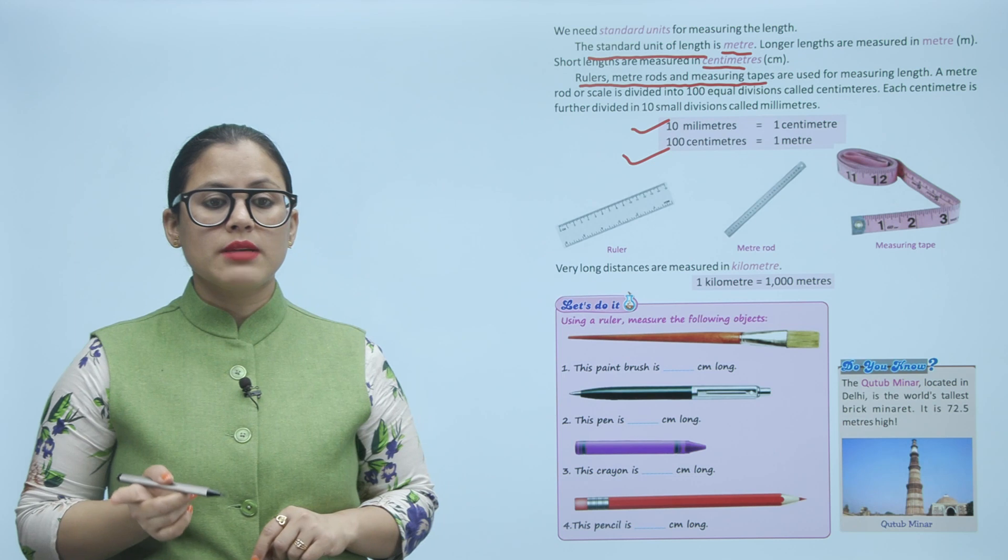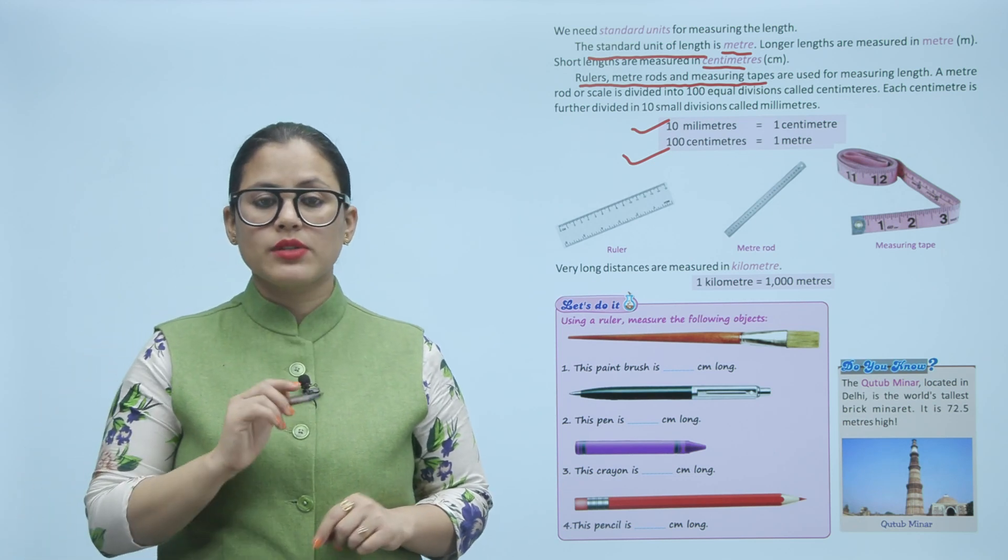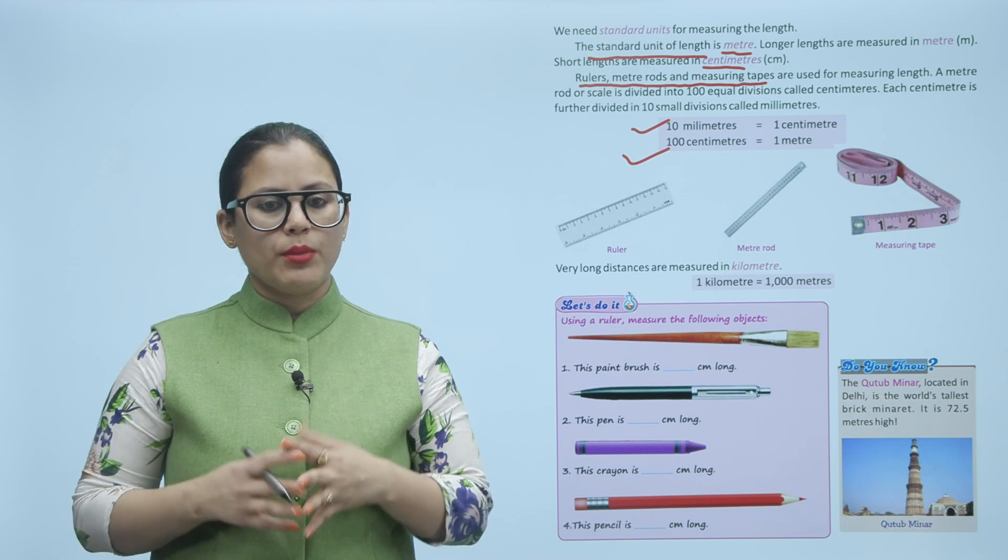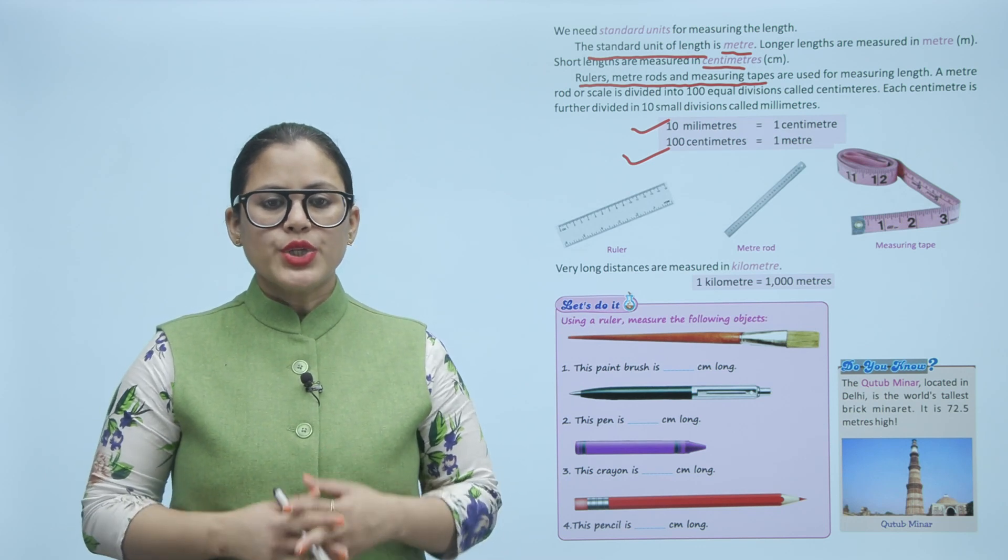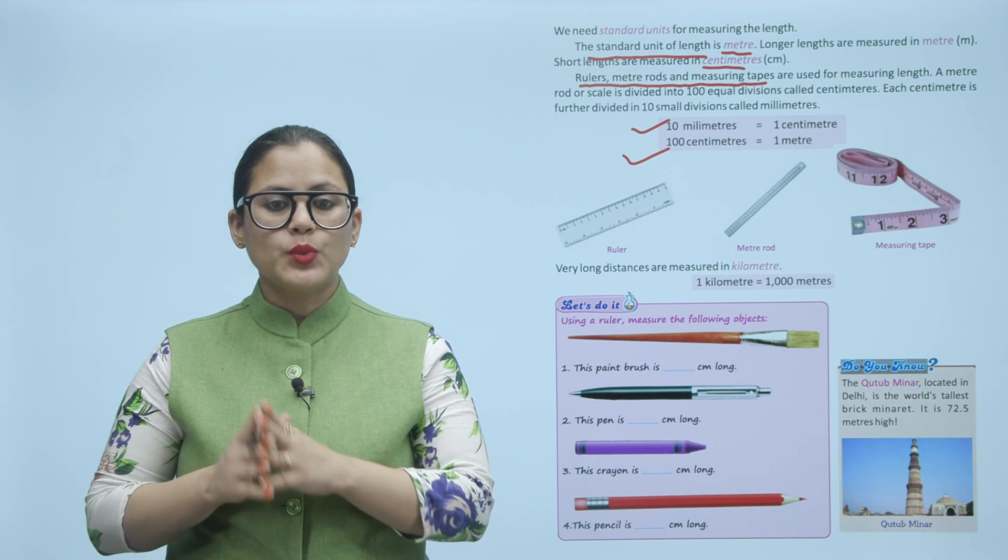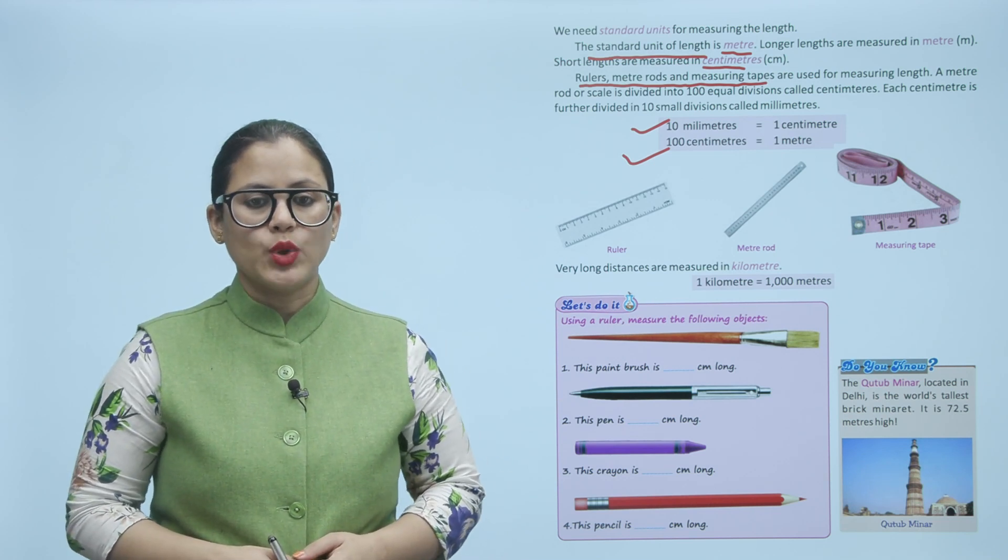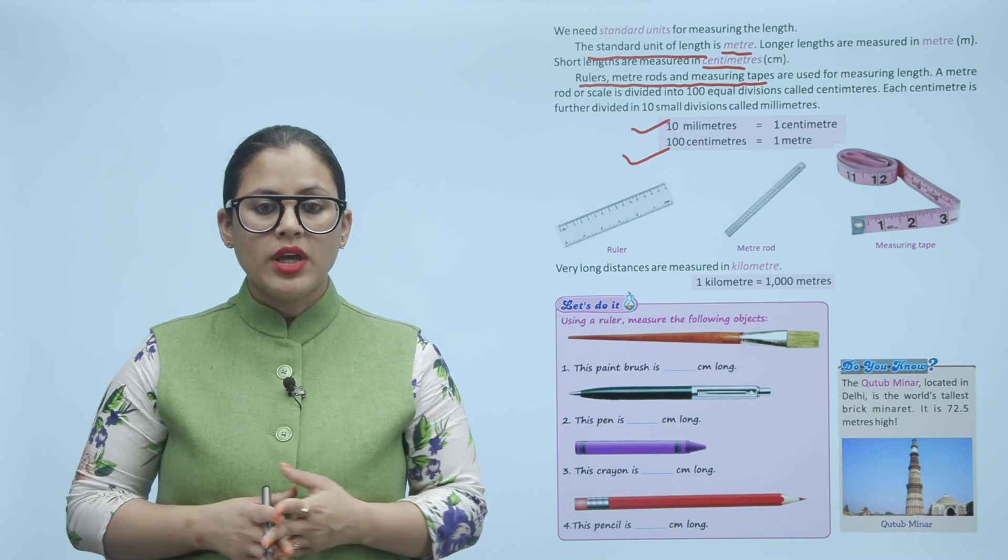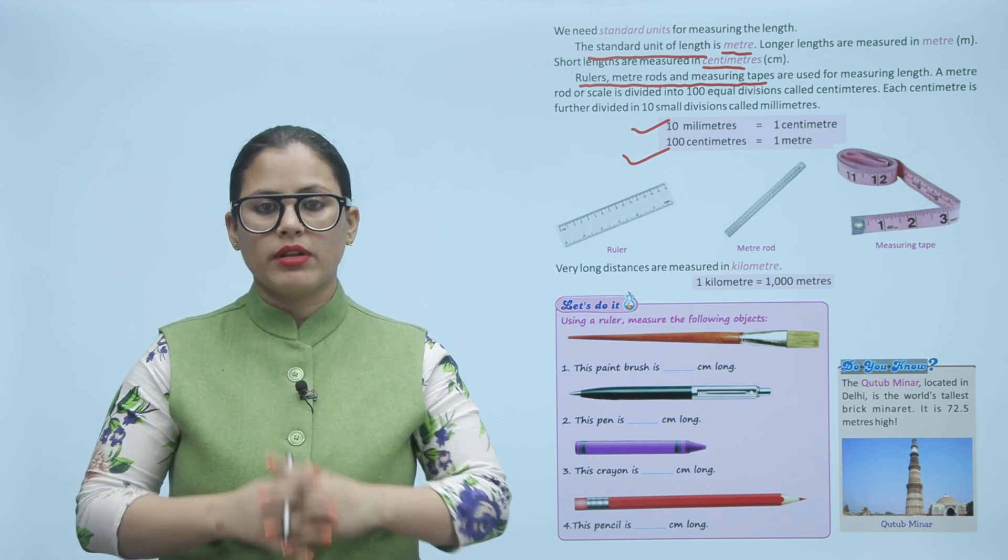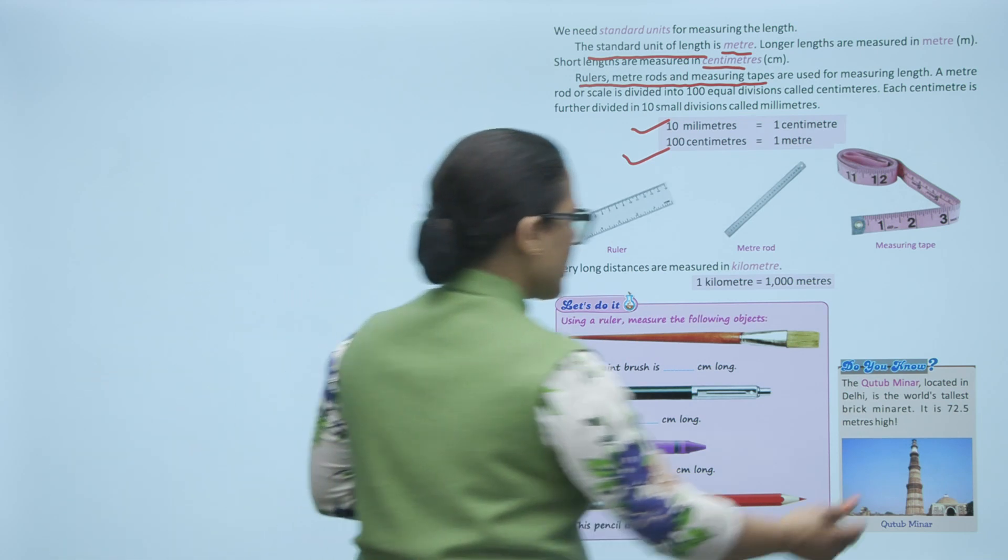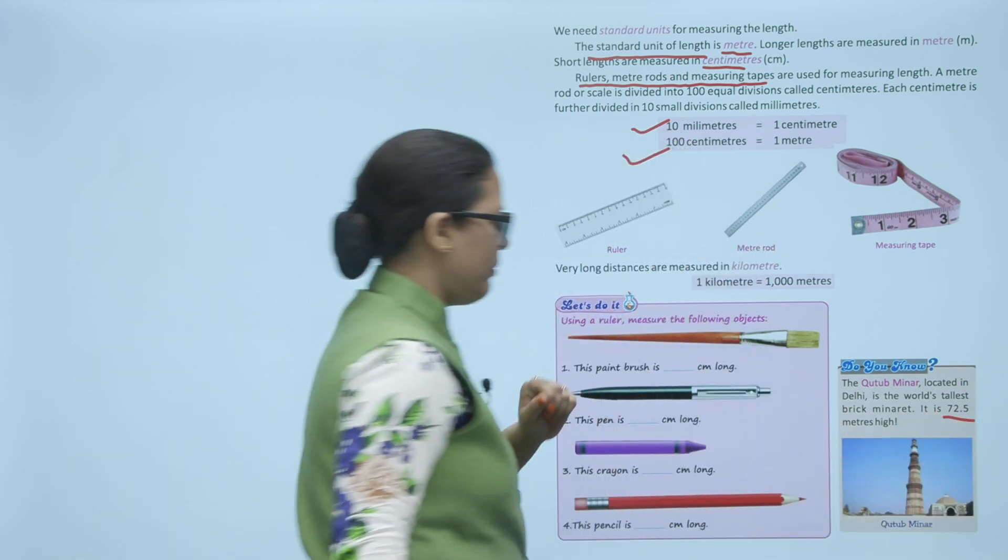Very long distances are measured in kilometer. 1 kilometer is equal to 1000 meters. If it is a long distance then you go to kilometers. Do you know that Qutub Minar located in Delhi is the world's tallest brick minaret? It is 72.5 meters high. Qutub Minar, which is in Delhi, is the world's tallest brick minaret. Its height is 72.5 meter.